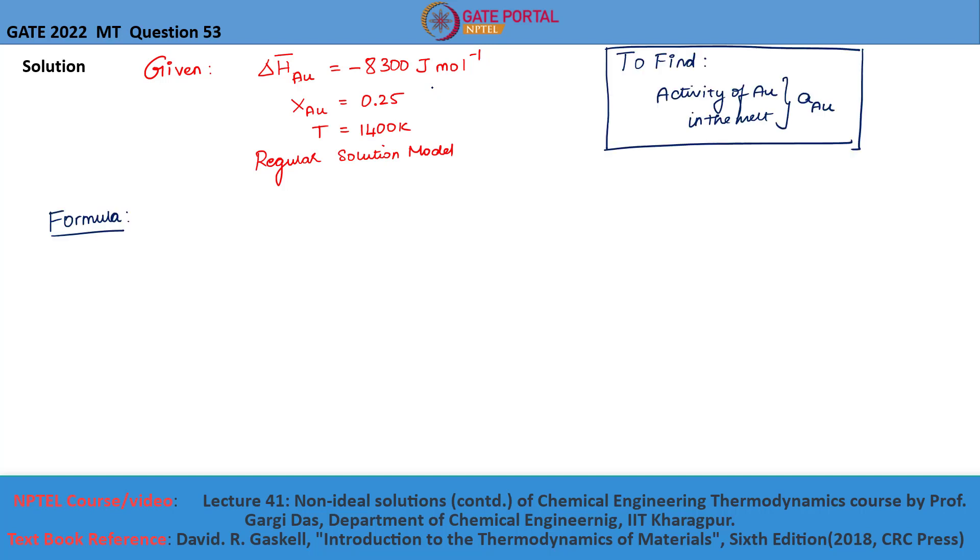We have to find the activity of gold in the melt, that is a_AU, and let us now look at the formula.